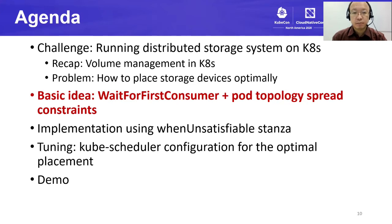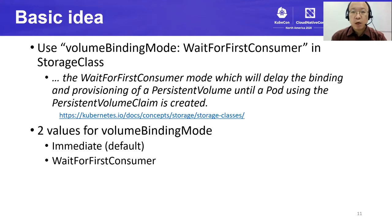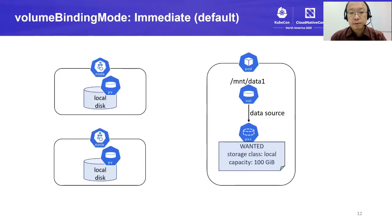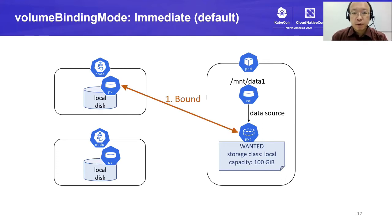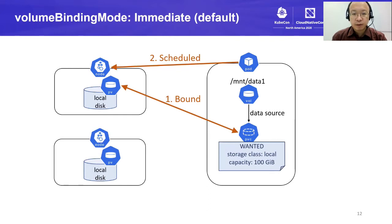Now, jump into the basic idea. Our basic idea is to specify wait-for-first-consumer for the volume binding mode in a storage class. But what is the volume binding mode exactly? It can take a value of immediate or wait-for-first-consumer. The volume binding mode affects the timing when the binding of a PVC and a PV is determined. The default volume binding mode is immediate — when the PVC is created, Kubernetes immediately finds or creates a matching PV and binds them. This binding works as a topology constraint for KubeScheduler when it schedules the pod that uses this PVC. In our case, the PVC is bound to a local disk, so the consumer pod is bound to the disk's node in effect.